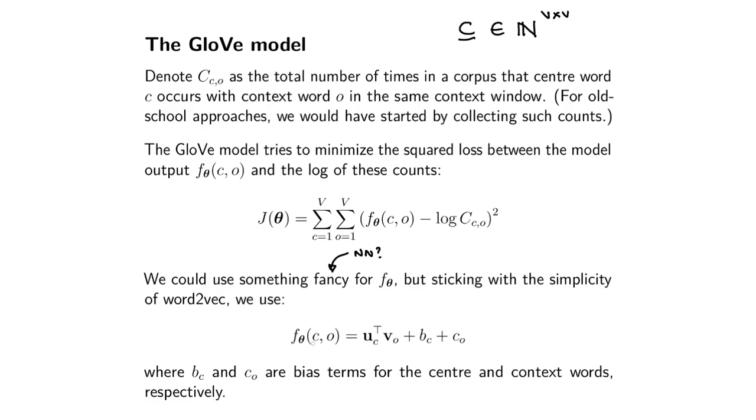In particular, what we're going to do is say our model for the log counts of a center word occurring with the context word is the dot product of a center word embedding with the context word embedding, plus some bias terms for the center word and the context word.